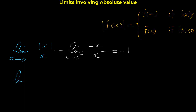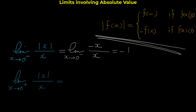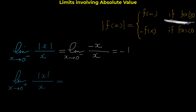What about the limit of |x|/x as x approaches 0 from the positive side? You can pause and try it yourself. Because x approaches 0 from the right, x is a positive number, so we use the first case: |x| = x. We have limit of x/x as x approaches 0 from the right — the x's cancel and the limit equals 1.